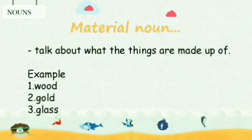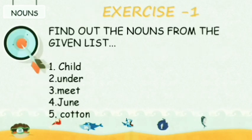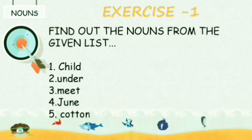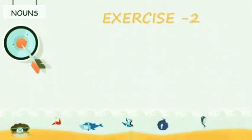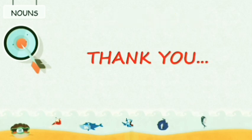Are you able to understand this? Now, let us try to do this example. Find out the nouns from the given list. The first one is 'child,' second one is 'under,' third one is 'meat,' fourth one is 'June,' fifth one is 'cotton.' Children, pause your video and try to find out the nouns from this list. The answers are given in red color: child, June, and cotton — these are the nouns from this list. I will attach a file along with this video. Try to do those exercises. Thank you children. Have a nice day.